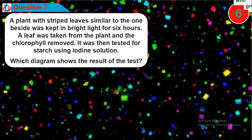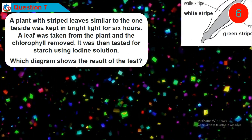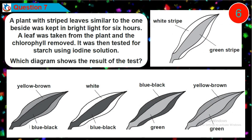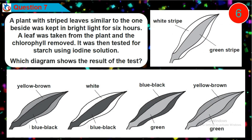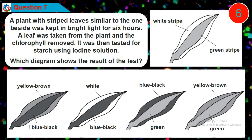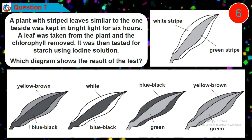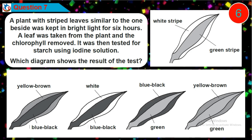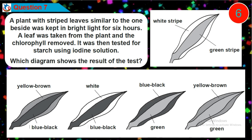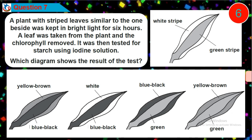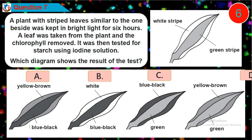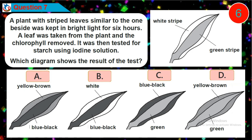Question seven: a plant with striped leaves similar to the one shown was kept in bright light for six hours. A leaf was taken from the plant and the chlorophyll removed. It was then tested for starch using iodine solution. Which diagram shows the result of this test? Is it option A, B, C, or D?